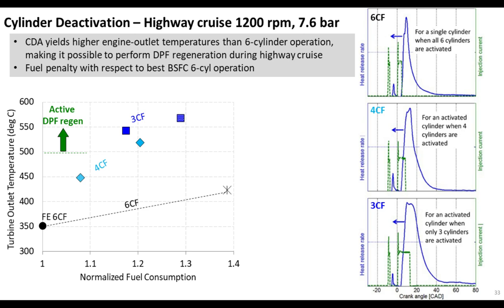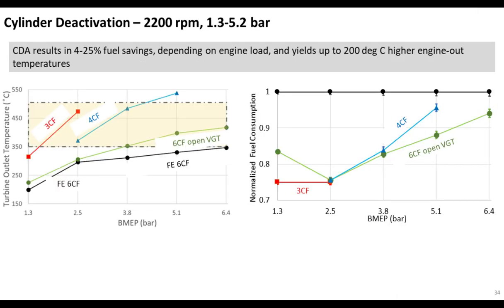Stepping back — this is highway cruise, 1,200 RPM, 7.6 bar. Our goal here is not so much focused on stay-warm after-treatment thermal management, but on what if you want to do a transparent-to-user DPF regeneration? At and around highway cruise, at least for this engine, you may not be able to get the temperature as high as you might prefer with the air handling architecture on our test article. With cylinder activation, you can get temperatures well above 500 degrees C — and this is also without sacrificing engine-out NOx or soot emissions. So CDA has additional benefits around thermal management, including active DPF regeneration.